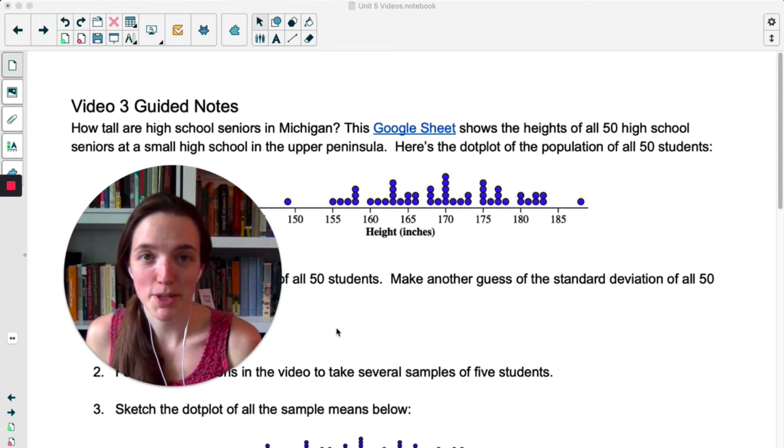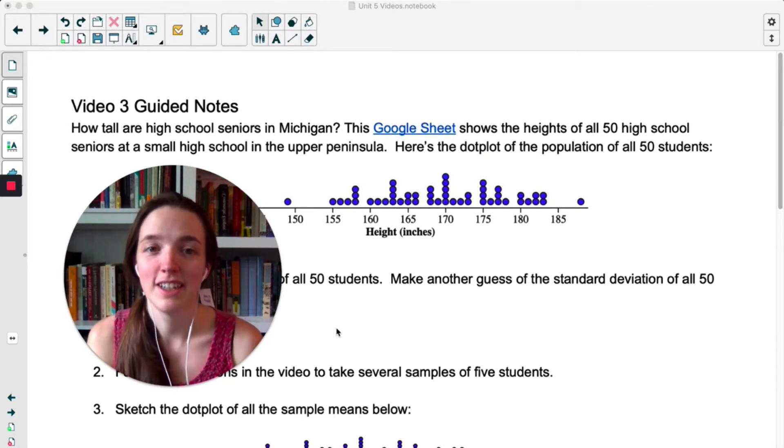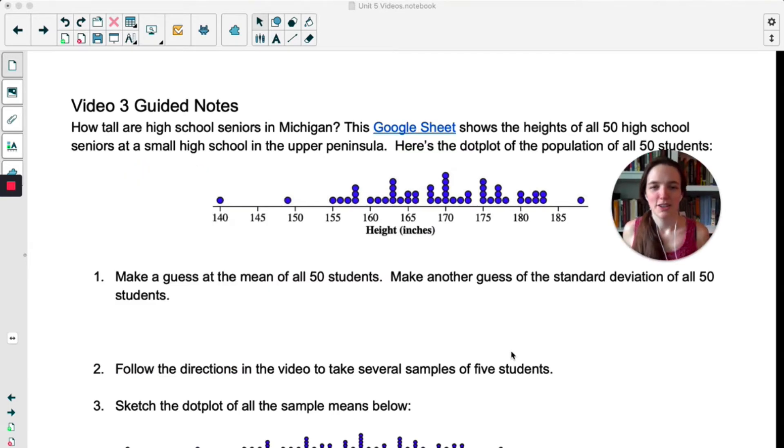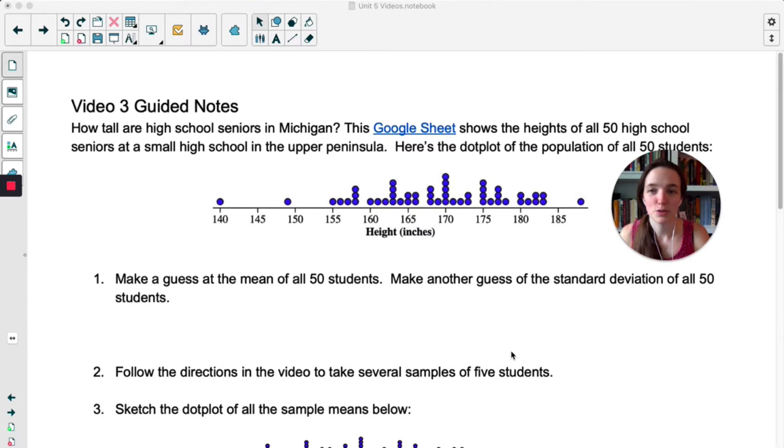This example comes straight from StatsMedic, and they are teachers in Michigan, which is why this is about students in Michigan. I realize that if you're watching this, chances are good that you are not from Michigan. Sorry, not sorry? I don't know. It's a good example, so we're going to use it. Here's our population. We have 50 high school seniors, and this is their height in inches. We can see that the variability is pretty widespread. It goes from 140 up to almost 190. I want you to make a guess at the mean of all 50 students, and then make another guess of the standard deviation. It doesn't have to be right. You're just guessing. Pause the video and do that now.